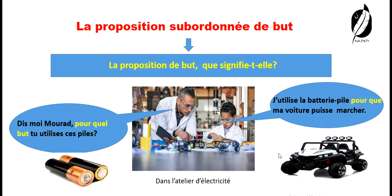Est-ce que la voiture marche ? On ne sait pas. C'est quelque chose du futur. Elle pense au futur. Elle va mettre les deux piles et elle va voir. Maintenant, je pense que vous avez compris le but. Pour le but, on pose la question par « pour quel but ». Et la réponse contient « pour que » : j'utilise la batterie pile pour que ma voiture puisse marcher. Mourad a exprimé son but et son intention derrière l'utilisation des deux piles.